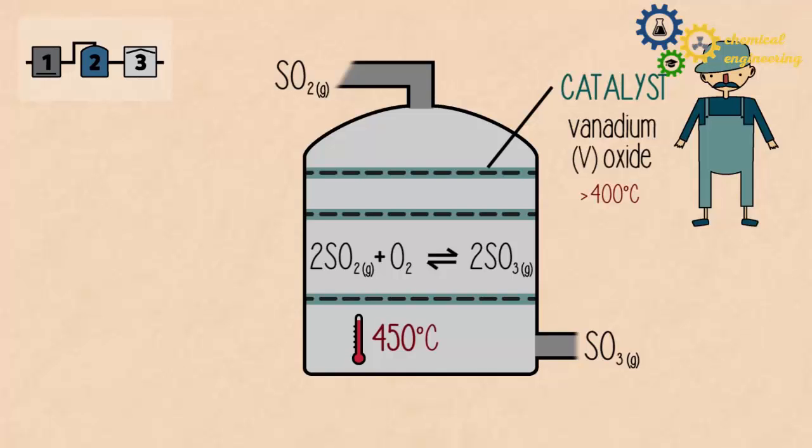You need the gases to reach equilibrium within the very short time that they are in contact with the catalyst in the reactor, so having an increased temperature ensures a high rate of reaction, meaning you establish the forward reaction quickly.